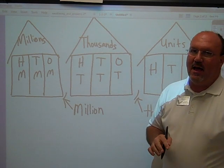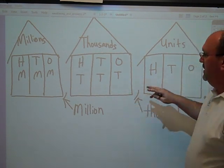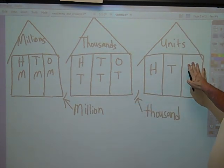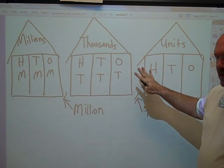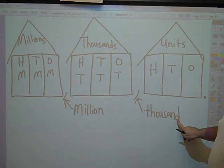We use the place value houses with the place value neighborhood. There's a house for the units: ones, tens, and hundreds. There's a comma here which is a separator between these houses. We call that the thousands. You can call it the thousands fence or the thousands comma.